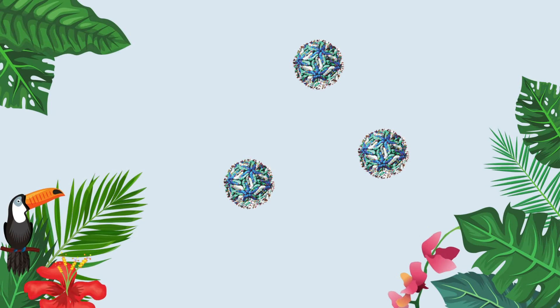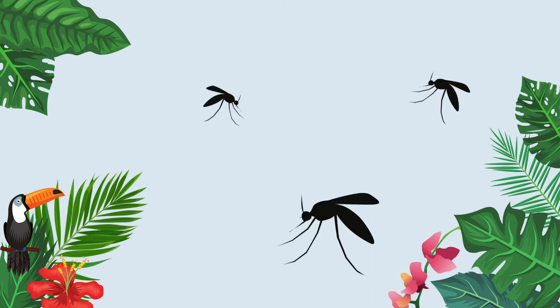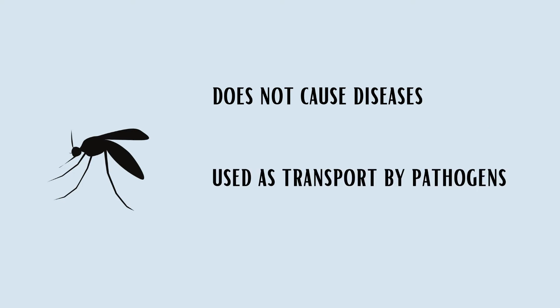Dengue is a virus common in tropical countries. This is because the Dengue virus is spread among people using mosquitoes for transport, and mosquitoes love living in tropical regions. A living organism that does not cause diseases but is used as transport by pathogens like bacteria or viruses to spread among hosts is called a vector.